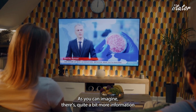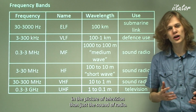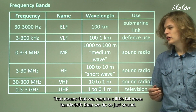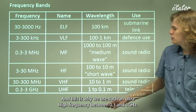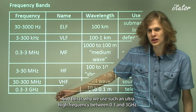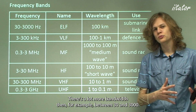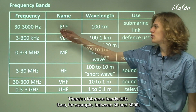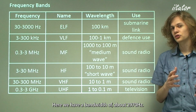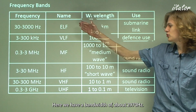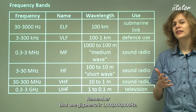Ultra high frequency is used to transmit television. There's quite a bit more information in a television picture than just the sound of radio, so we require more bandwidth, which is why we use such a high frequency. Between 0.3 and 3 gigahertz there's a lot more bandwidth than, for example, between 30 and 3000 hertz — a range of about 2970 hertz. Remember that one gigahertz is one billion hertz.